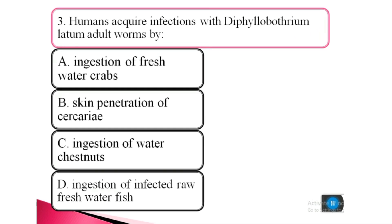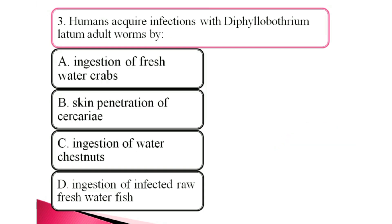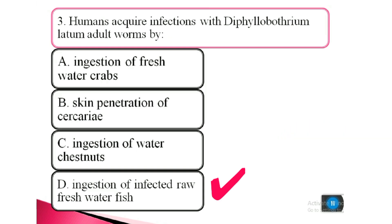Question 3. Humans acquire infection with Diphyllobothrium latum adult worms by: a. ingestion of watercress crops, b. skin penetration of cercariae, c. ingestion of water chestnuts, d. ingestion of infected raw freshwater fish. The answer is d. ingestion of infected raw freshwater fish.